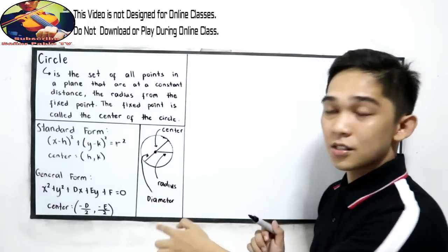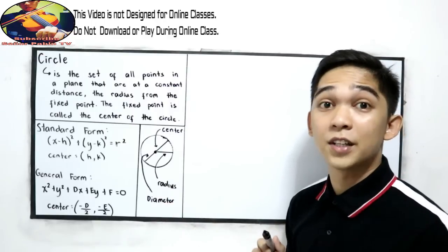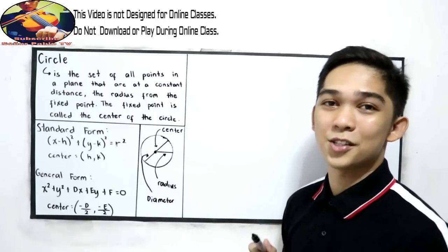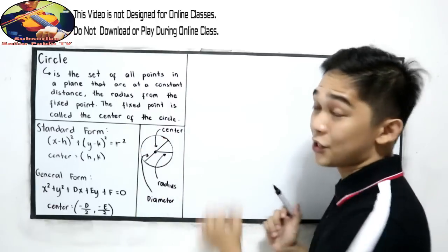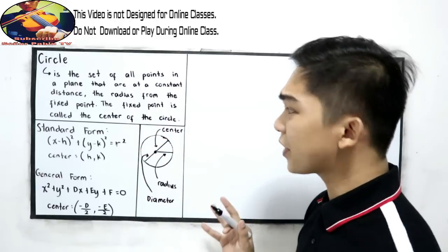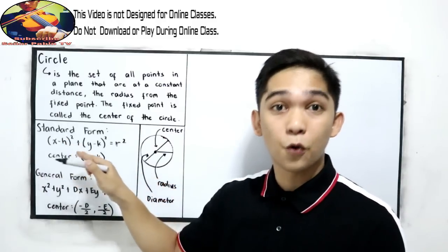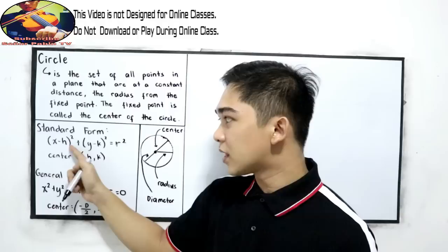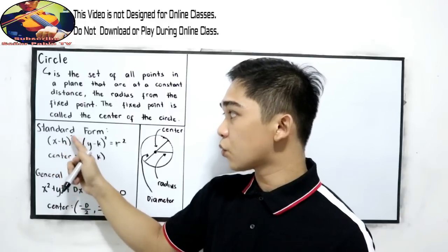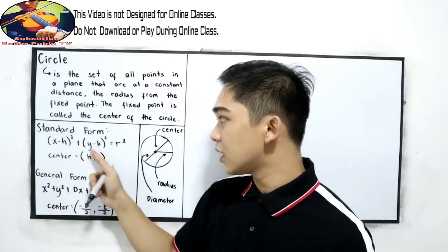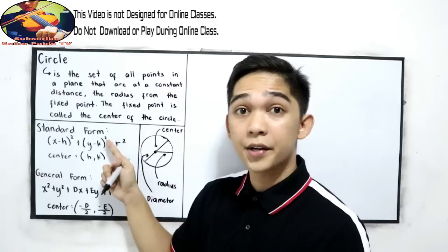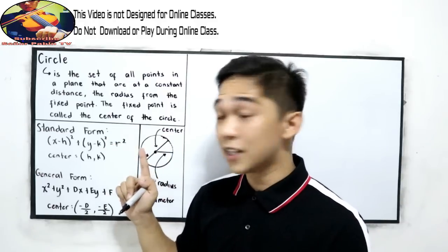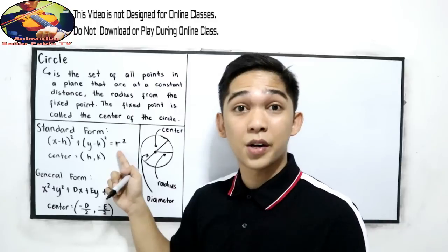The radius is half of the diameter; the diameter is twice the radius. In our circle, we have the standard form: quantity (x minus h) squared plus quantity (y minus k) squared is equal to r squared, where r is our radius.